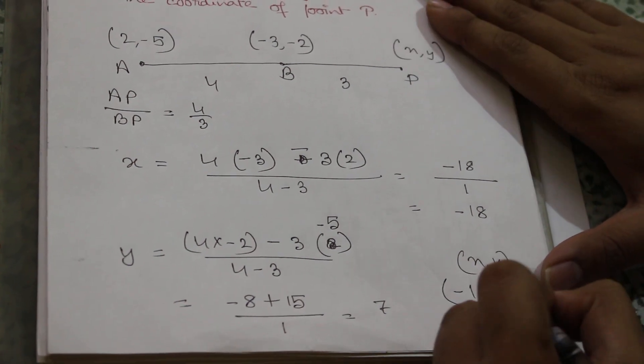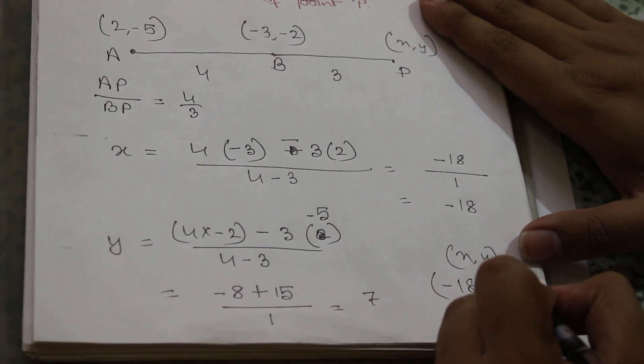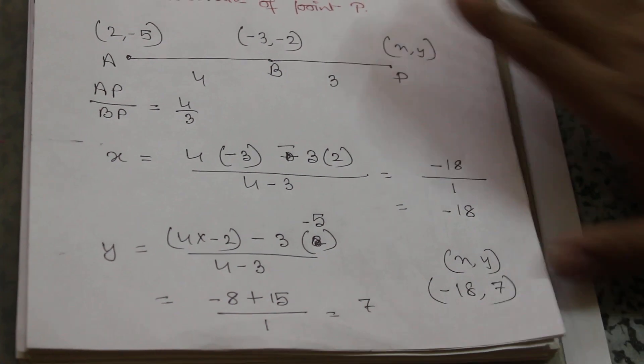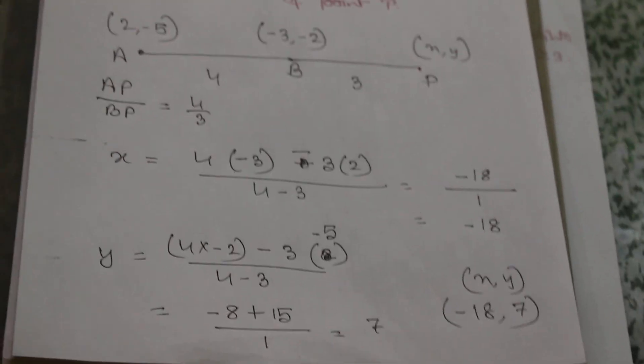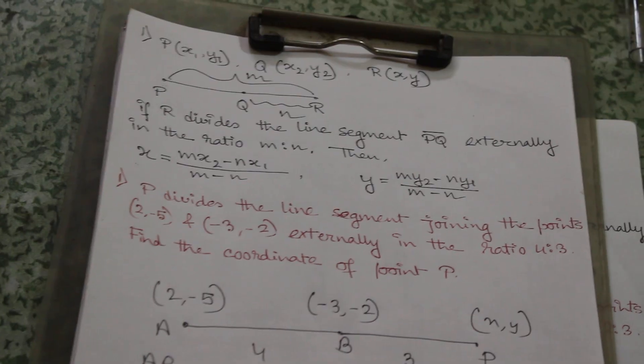(-18, 7). Understood? This is how we can easily calculate the coordinate of that point.